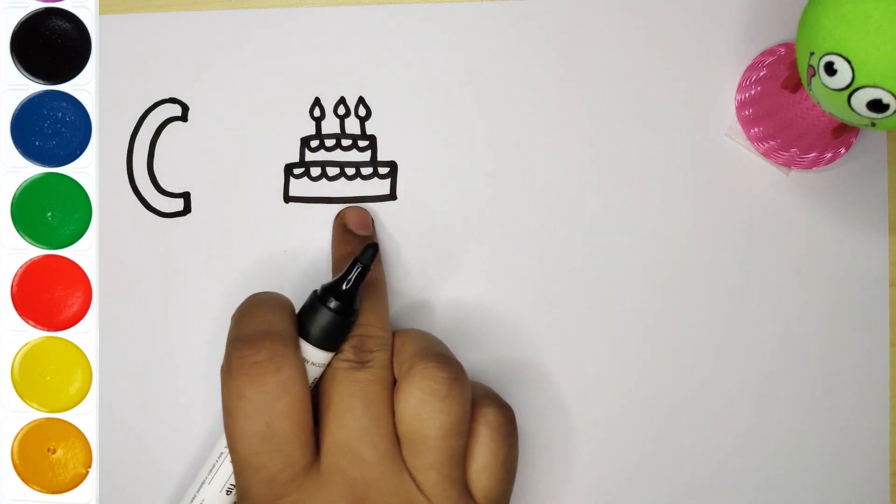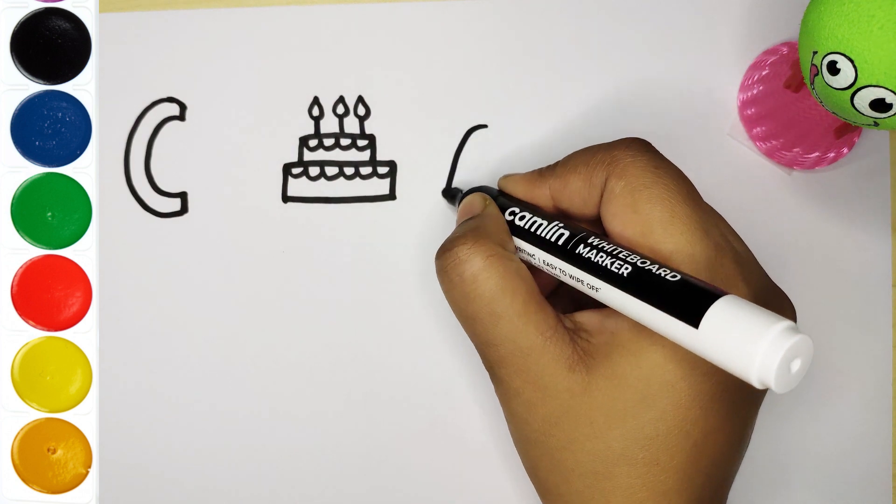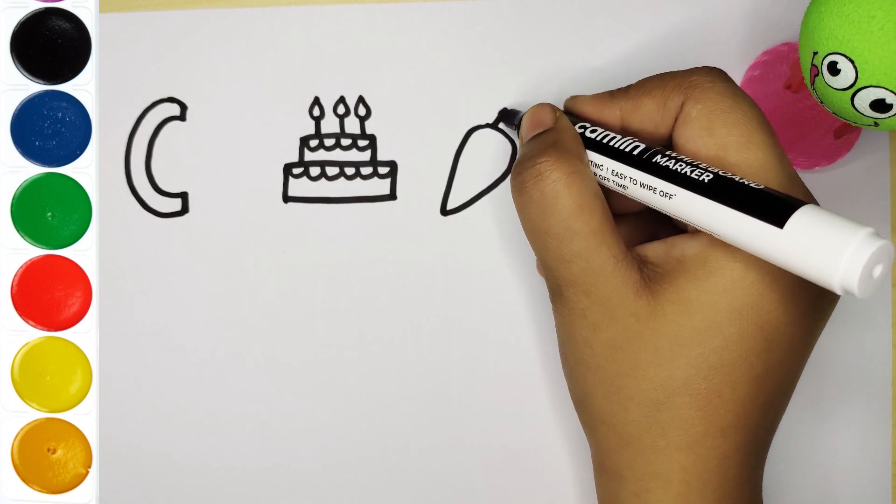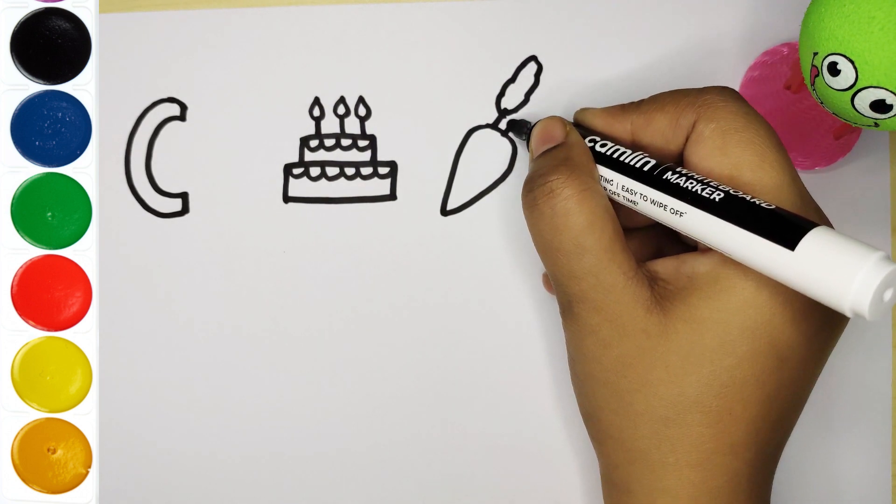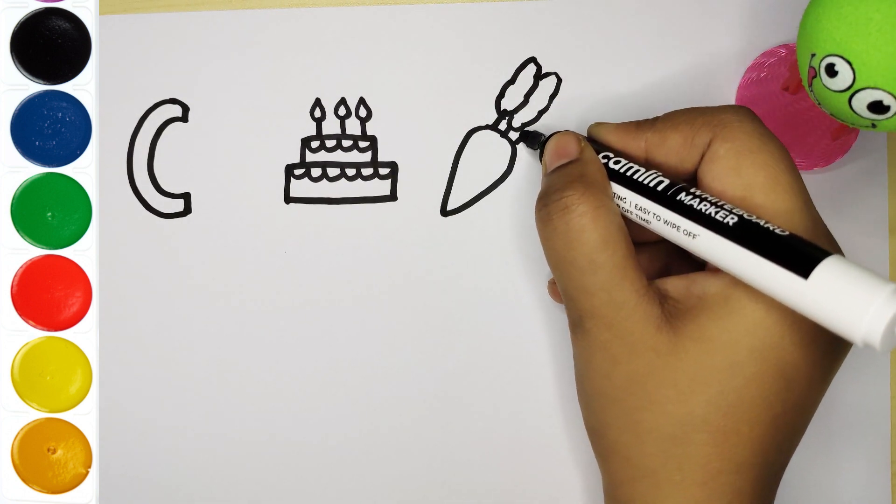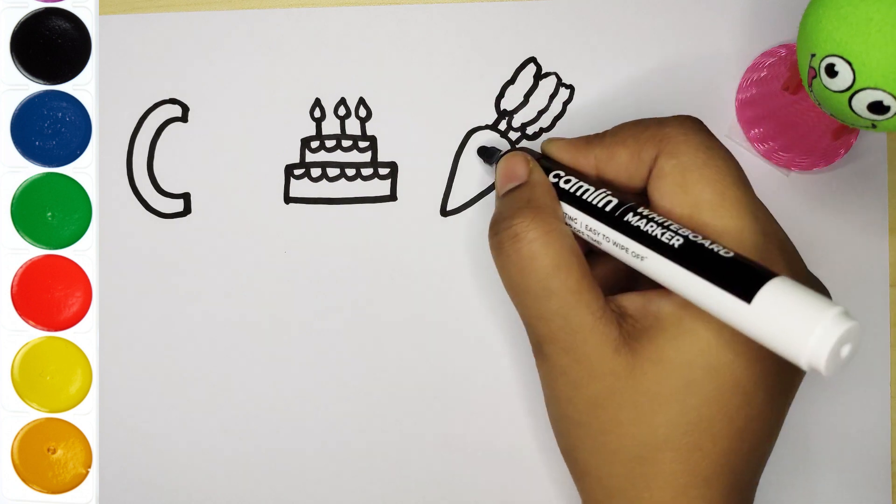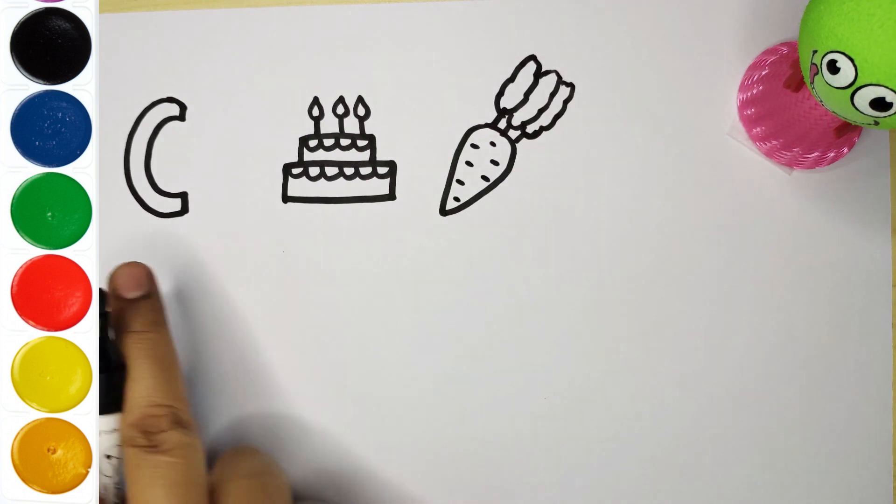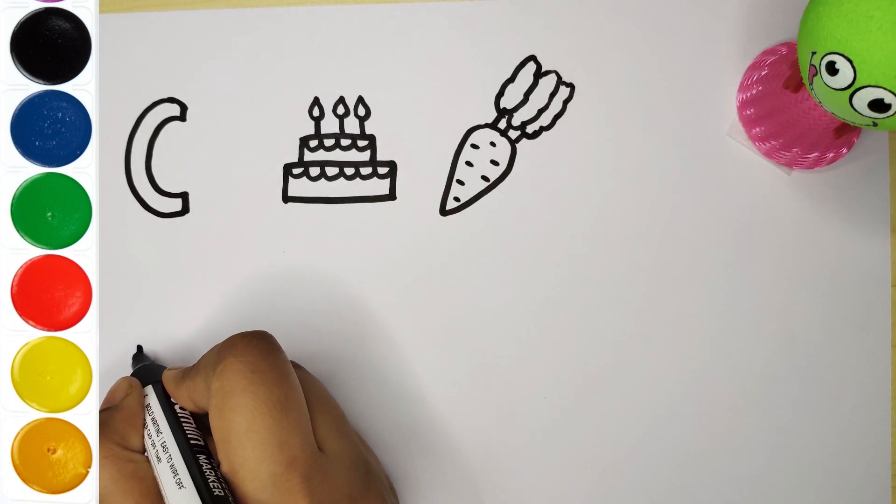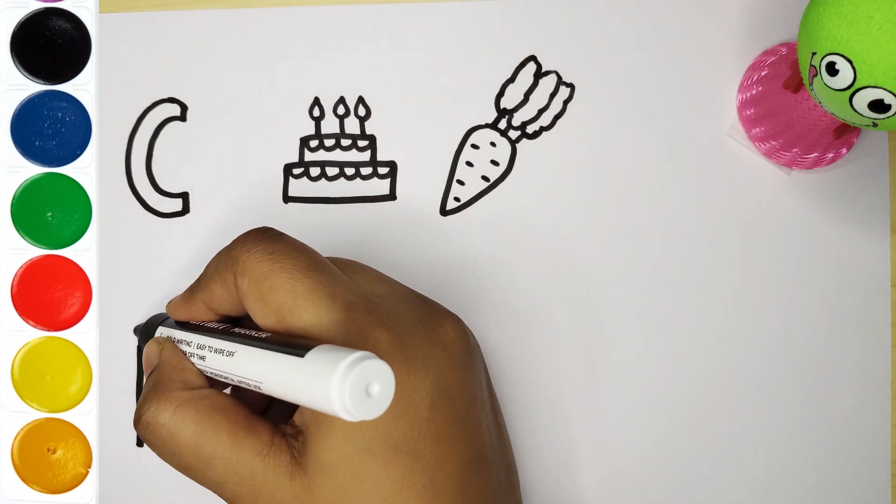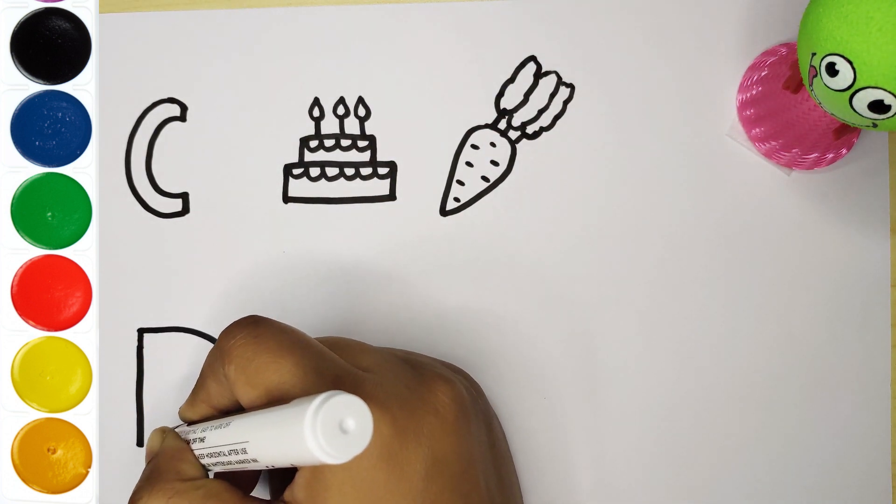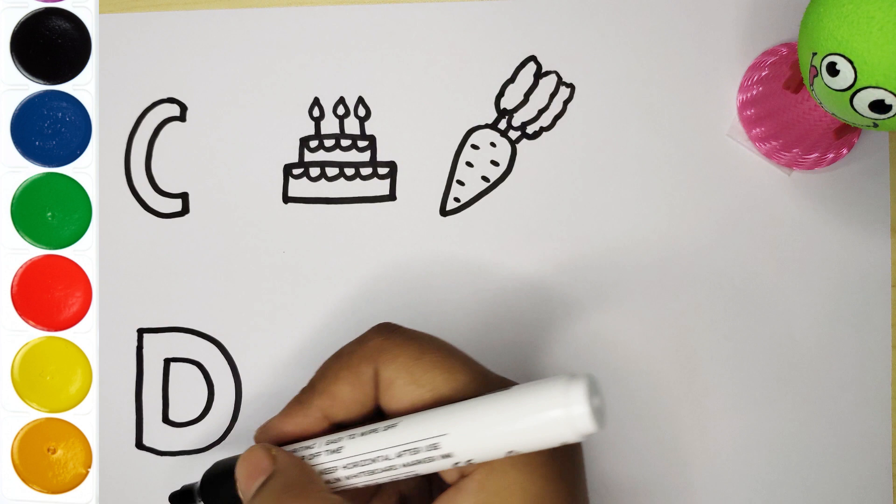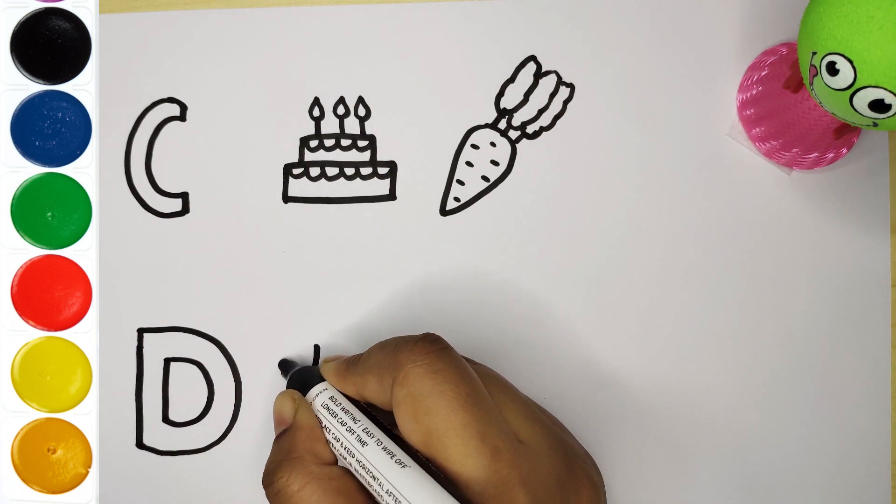Cake, C is for cake. L M N O P Q R S T U V W X Y and Z. Now I know my ABCs, next time won't you sing with me. C is for cake. Next time won't you sing with me.